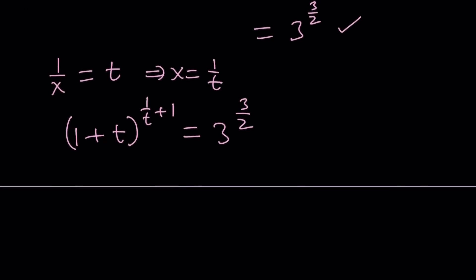Great. Let's go ahead and do a little bit of work here in the exponent. So let's write the base first as t plus 1. And then I want to make a common denominator. So then I can write this as t plus 1 divided by t. And that is equal to 3 to the power 3 halves.